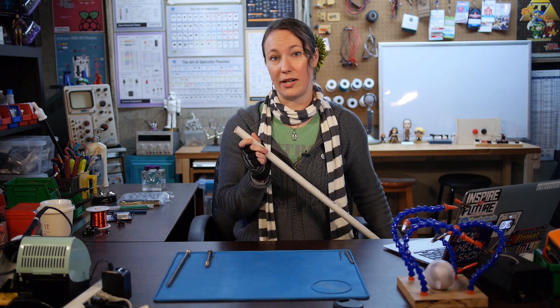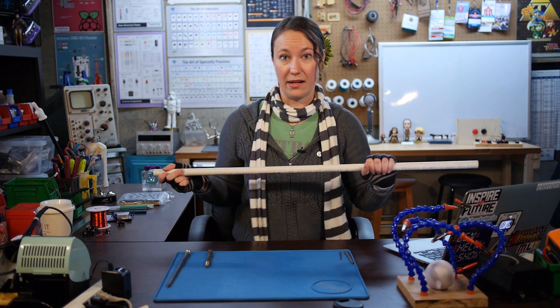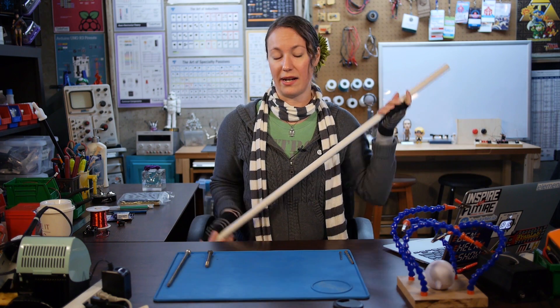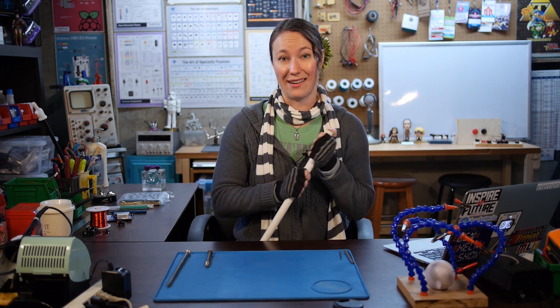The nice thing about that is I can also fit my electromagnet in the end. So one end will have the electromagnet and on the other end, we'll have a battery pack for our power source and a button to turn our magnet on and off.